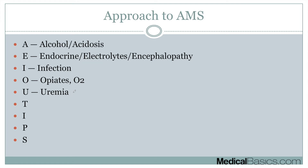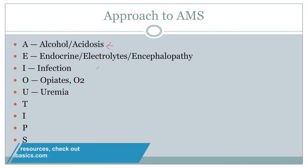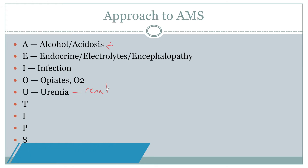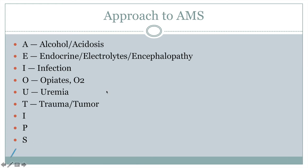U stands for uremia. Going back to metabolic acidosis, any type of renal impairment that causes severe uremia can lead to altered mental status. It's also one of the indications for dialysis, which will be covered in another video.